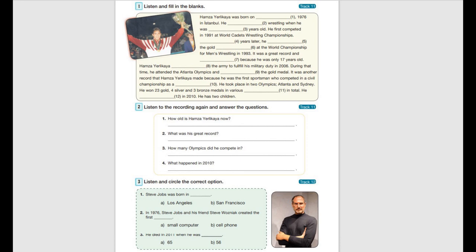He took place in two Olympics, Atlanta and Sydney. He won 23 golds, 4 silvers and 3 bronze medals in various championships in total. He got married in 2010. He has two children.